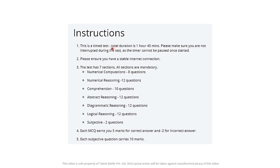Let's take a look at last year's pattern — August 2020 exam. There were actually seven sections. Total duration was one hour 45 minutes. The sections were: numerical computations with 8 questions, numerical reasoning with 12, comprehension with 10, abstract reasoning with 12, diagrammatic reasoning with 12, logical reasoning with 12, and subjective with 2 questions. Each MCQ earns five marks for a correct answer and minus two for incorrect, so negative marking was there.